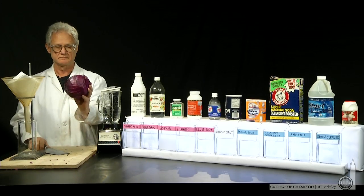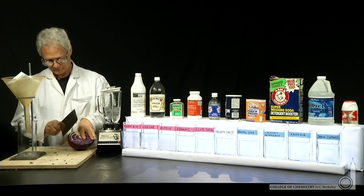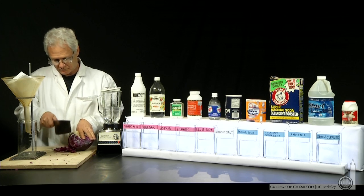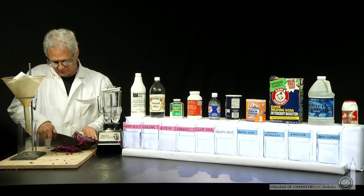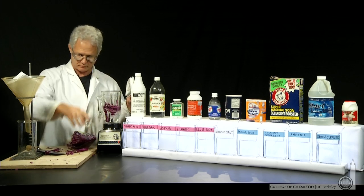We're in the demo lab with Lonnie, and he's going to demonstrate how pH can be visualized by the color of solutions. Certain chemicals turn color based on the pH of the solution. One of those chemicals is the chemical found in the dye of purple cabbage leaves.